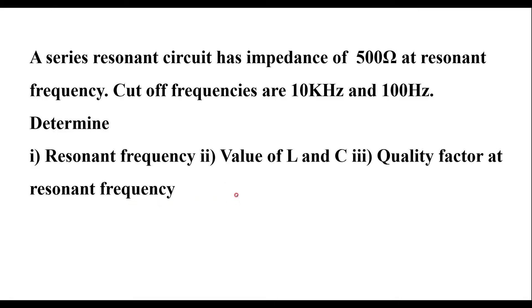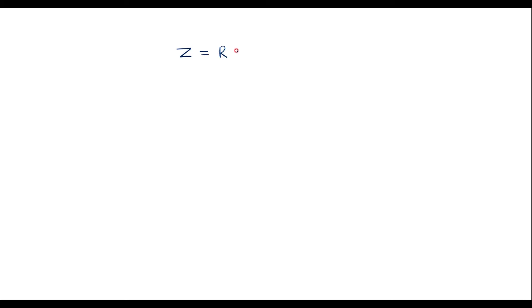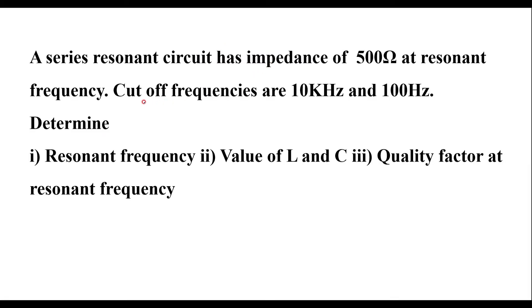In this numerical, impedance is given which is 500 ohm at resonant frequency. We know that the impedance of series RLC circuit, Z, is equal to resistance value at resonance. Therefore, the impedance given is 500 ohm — that is nothing but resistance, because at resonant frequency Z is equal to R. So 500 ohm is given, and we have two cut-off frequencies: one is 10 kilohertz and another one is 100 hertz.